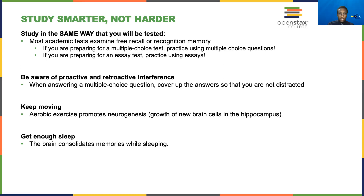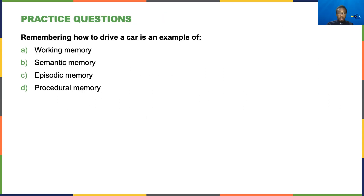Now let's do some practice questions. You can try out the strategy of covering up the answers until you're able to think of the answer on your own. First question: remembering how to drive a car is an example of... The answer here is D — procedural memory.